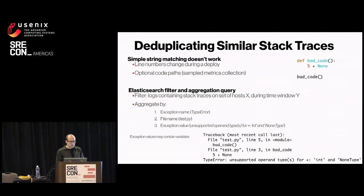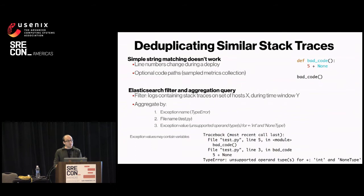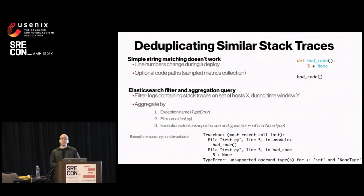To solve this we use Elasticsearch's powerful API to do a filter and aggregation query — filtering by logs containing stack traces on a set of hosts during some time window. We aggregate by exception name, then file name, then exception value. For example: a TypeError, file test.py, value 'unsupported operand'. This works because we assume there won't be too many stack traces in any given file, making exception-name plus file-name a unique enough pair. One problem is exception values often contain variable strings like IP addresses, so if there are too many unique exception values for a given pair, we treat the exception value as variable.